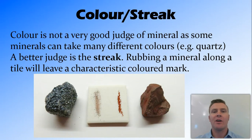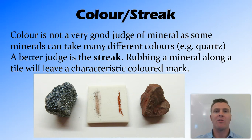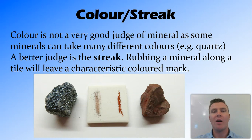Firstly, colour isn't a very good way to identify minerals, because different minerals can take different colours depending on the substances that they're mixed with. So a better indication of the composition of a mineral is the streak. The streak can be found by grinding the rock or mineral up into very fine granules. The way we do this as a test is we rub the mineral along a white tile and it will leave a characteristic coloured mark. This coloured mark may be different to the natural appearance of the mineral in its solid form.